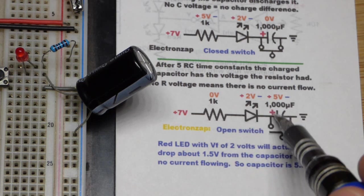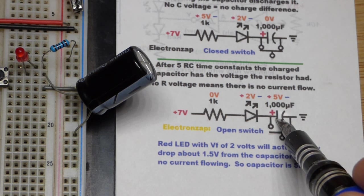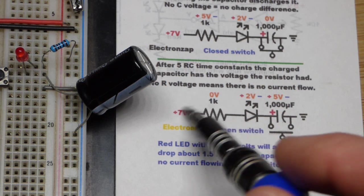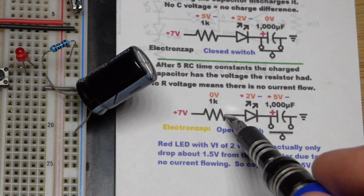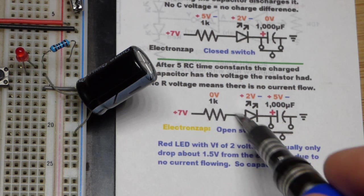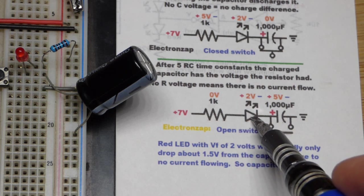At some point, current is going to stop once the capacitor is as charged as it's going to get. And there will be 0 volts across the resistor right there. That's going to be true, about 0 volts across the resistor.